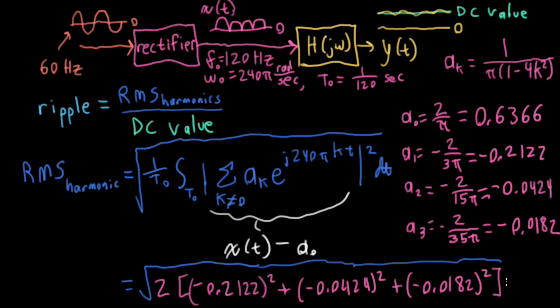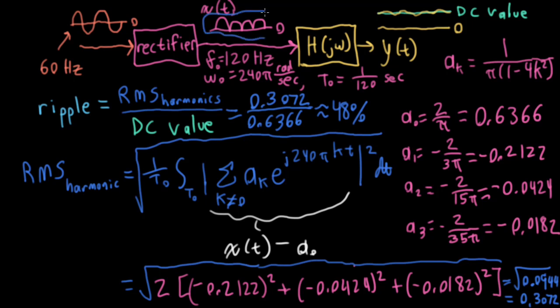Now, adding all of that up gives me a square root of 0.0944, which is 0.3072. So that's our RMS. So the resulting ripple would be 0.3072 over the DC value, which is 0.6366. And while that corresponds to a 48% ripple, that is not great. That is a whole lot of ripple. But again, that's what we get here just from x(t). That's assuming we're not doing any filtering.